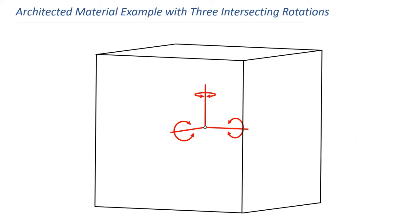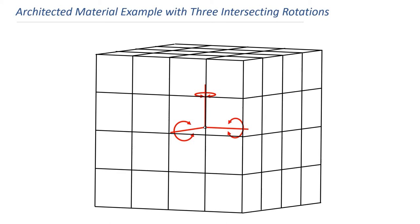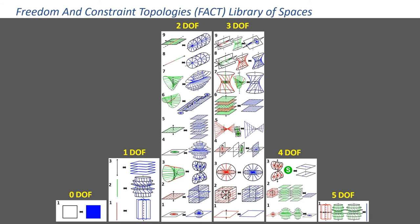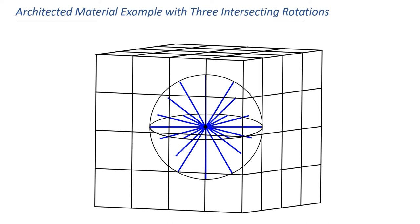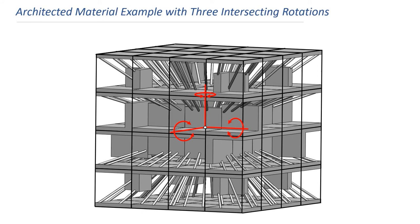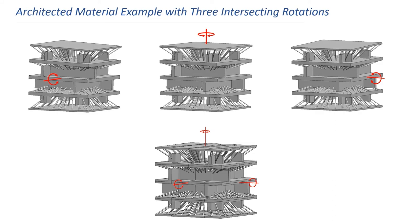Now I'm ready to show how FACT can be used to design architected materials. Suppose you wanted to design a material that occupies a cubic volume and achieves the same three intersecting rotations of the previous example. To generate an architected design solution, we first divide the material into unit cells — in this case a coarse resolution of four by four by four unit cells. We then identify the system's freedom space and constraint space pair, which is the same pair as the previous example. Using the constraint space, we identify what portions intersect each unit cell, select three non-redundant wires per Maxwell's equation, and join two rigid bodies together. Repeating this process for every unit cell generates the entire architected material achieving three intersecting rotations.